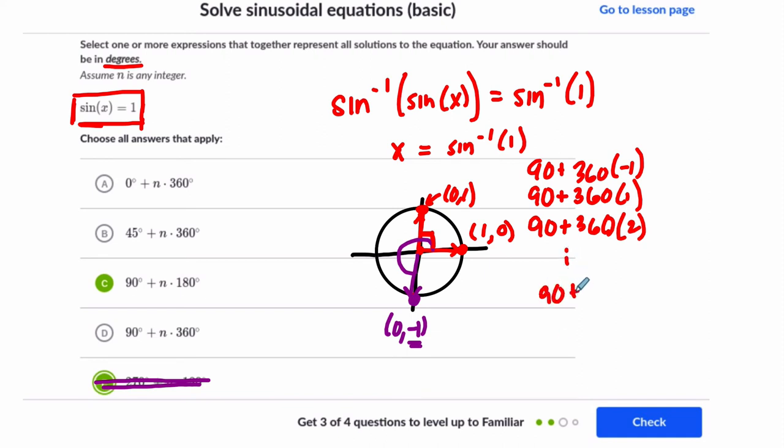So 90 plus any rotation of 360, so times n. Any number of full rotations of 360, so n has to be an integer. That's why they say that right here, would be the answer. So here I'm going to go with choice, I'm going to cross out this. This assumes a 180 rotation. I'm going to choose choice D.